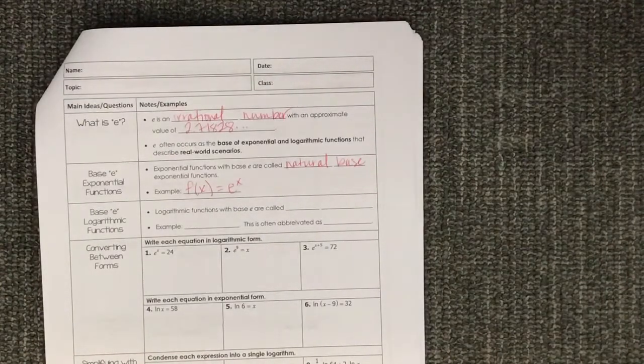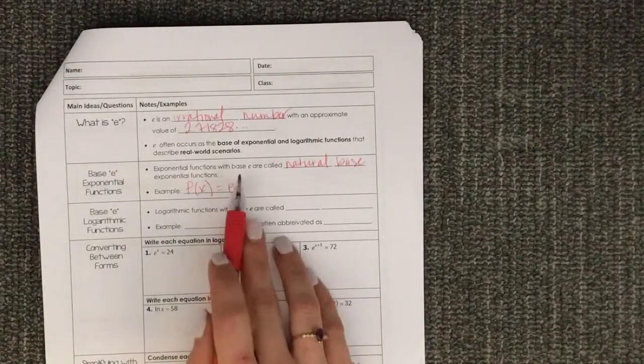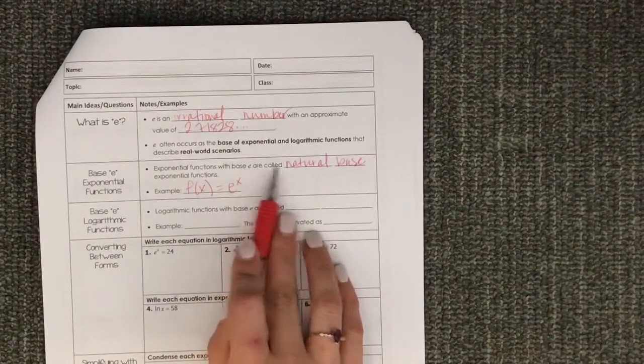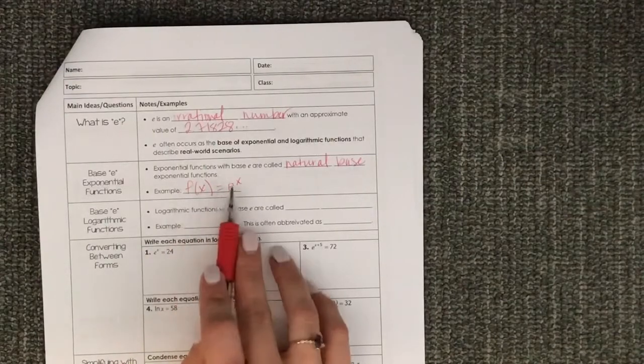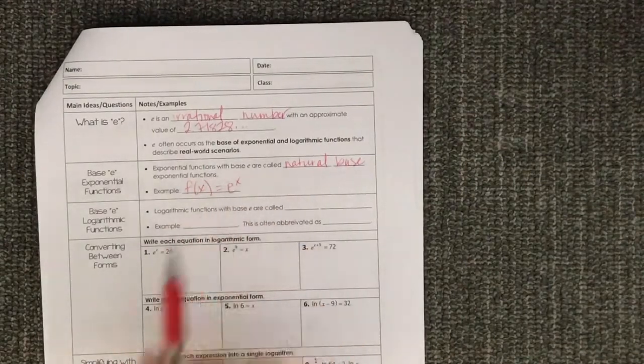E is called the natural number, and so exponential functions with a base E are called natural base functions. So f of x equals e to the x. That's the exponential function with the natural base.